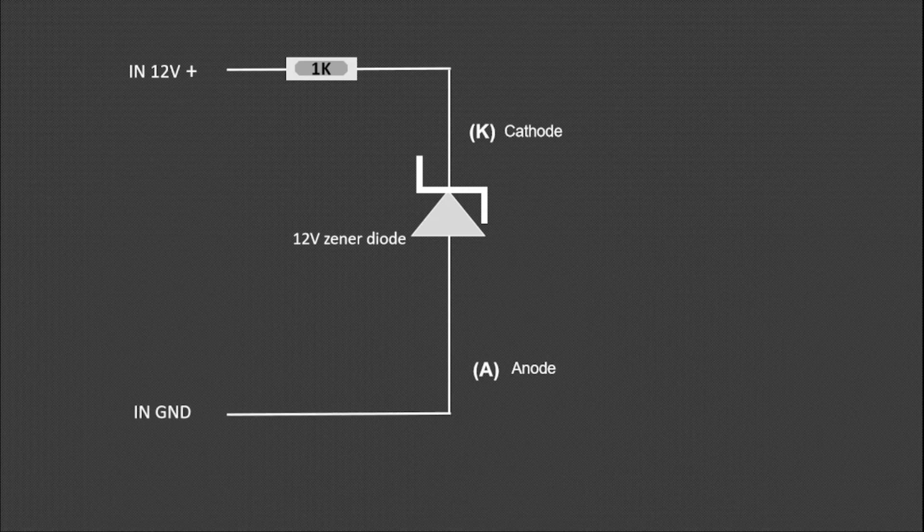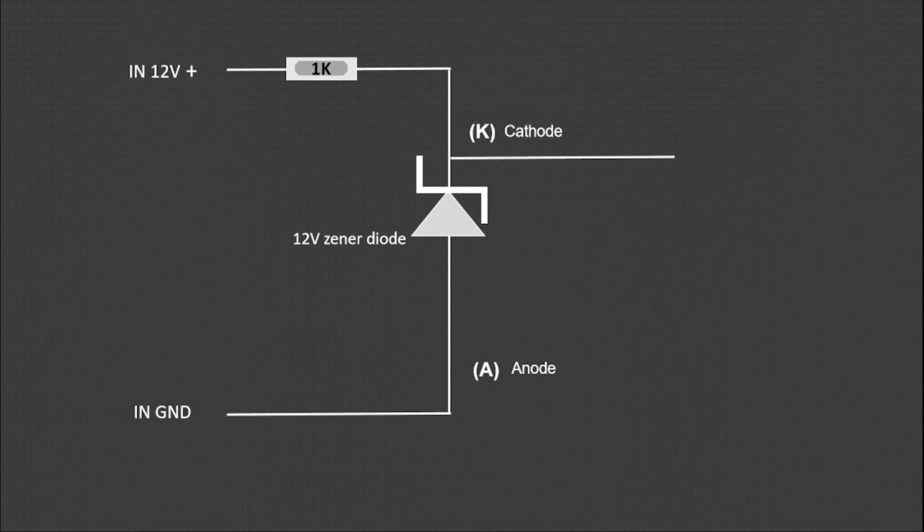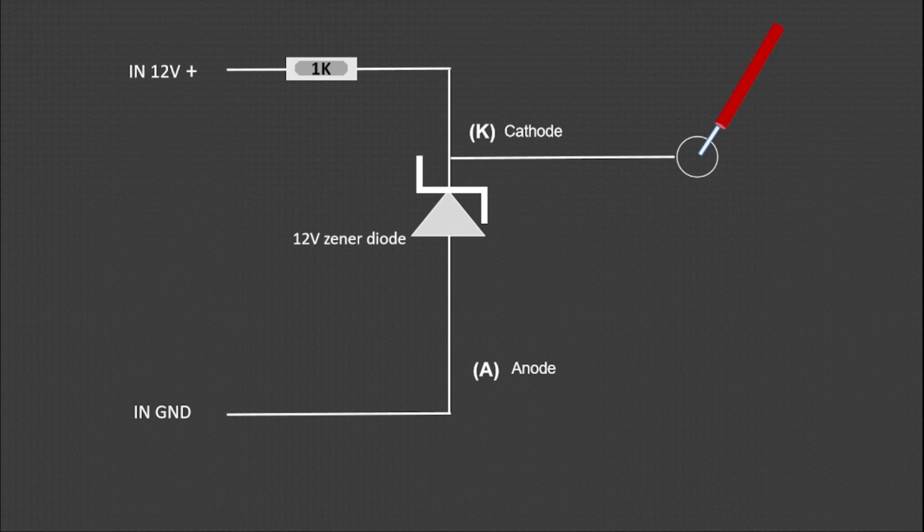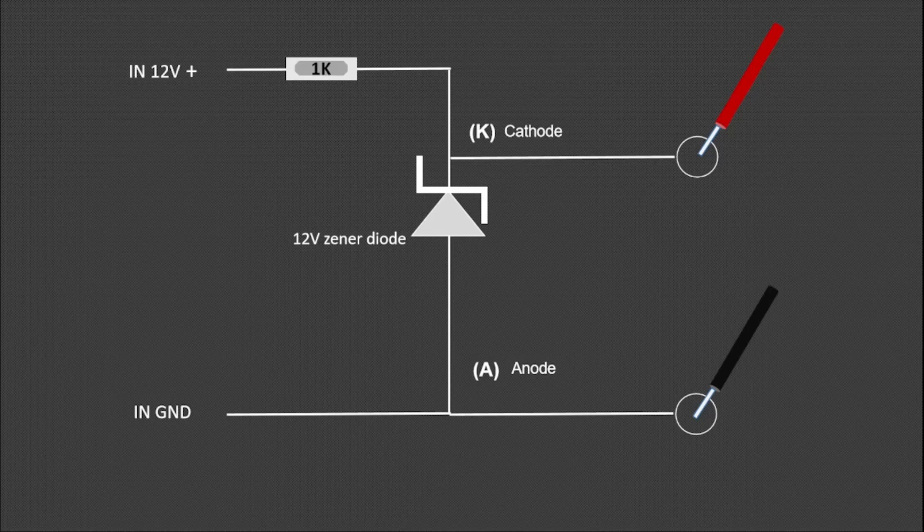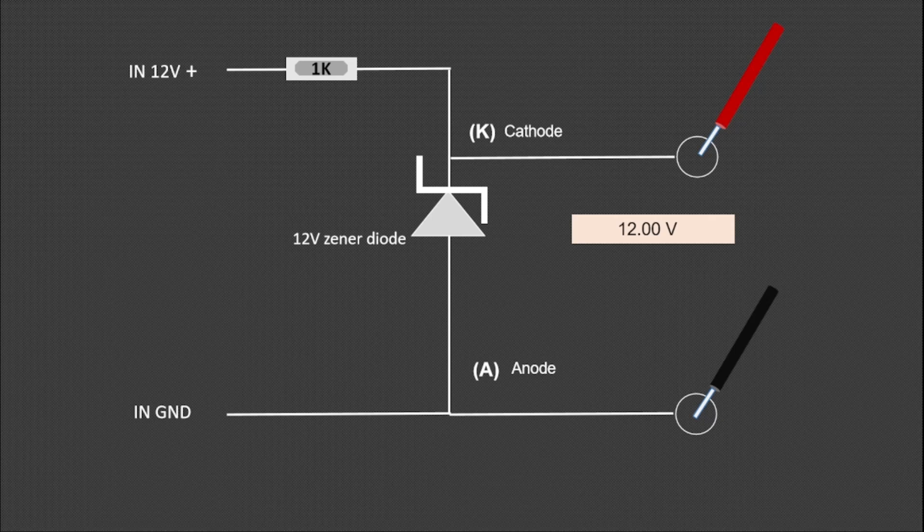The red lead of the multimeter will be connected to the cathode of the Zener diode. We will connect the black wire of the multimeter to its anode, which is the ground. We will find 12 volts there, because even though the Zener diode is 12 volts, it will drop anything more than 12 volts, not anything less or equal to it.